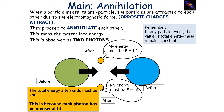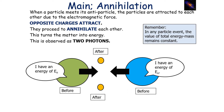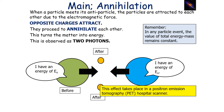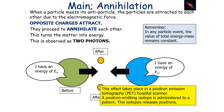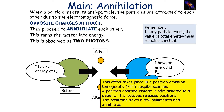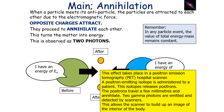The total energy of the two photons afterwards is 2hf, where hf is the energy of one photon. The two particles start with a rest energy of E₀ each, and that rest energy turns into the energy of the two photons. This effect takes place in a positron emission tomography scanner, or PET scanner, where a positron-emitting isotope is administered to a patient. The isotope releases positrons, which travel a few millimetres and annihilate, producing two gamma photons detected by scanners to build up an image of the interior of the body.